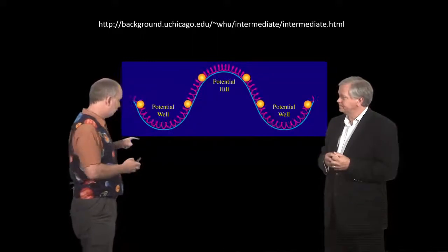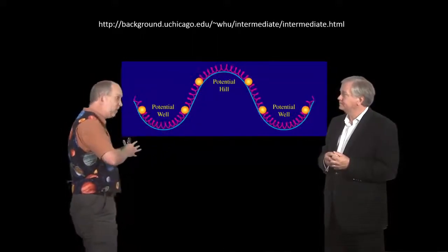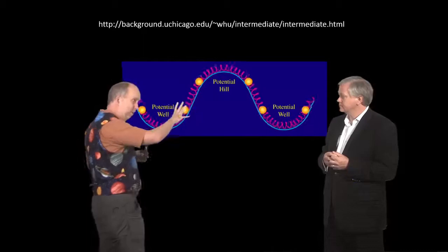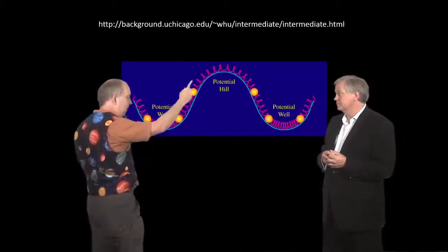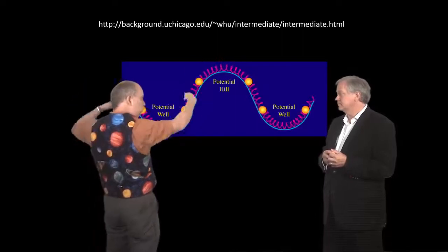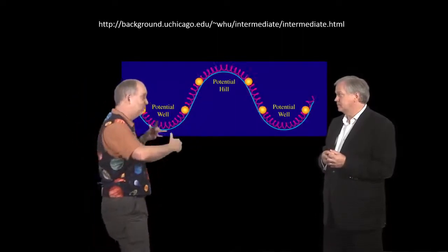But if you've got dark matter and baryons mixed in with the photons falling down, when they're going into a potential well, gravity's assisting them, so they'll go faster.